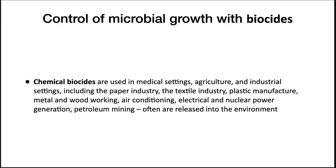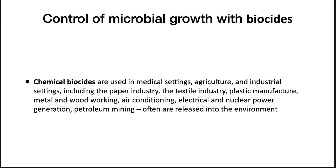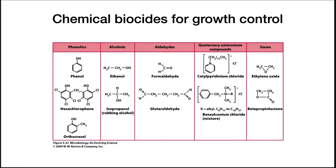Chemical biocides are used in medical, agricultural, and industrial settings, including the paper industry, textile industry, plastic manufacturing, metal and woodworking, air conditioning, electrical and nuclear power generation, petroleum mining, and others. Often they are released into the environment, which needs to be carefully considered. Chemical biocides are toxic chemicals that are non-specific for their target organism — they can be damaging to many organisms, not just microbes. Their action is usually non-specific in target molecule; they will chemically modify or denature DNA, chemically modify or denature proteins, and may dissolve or disrupt membranes. Examples include phenolics, alcohols, aldehydes, detergents, gases, heavy metals, and oxidizing agents.